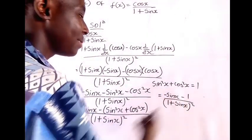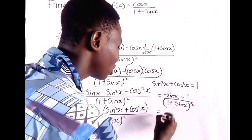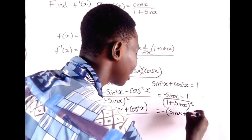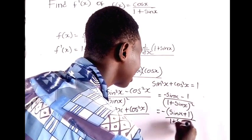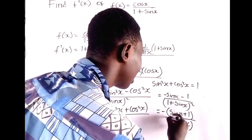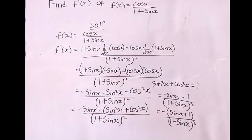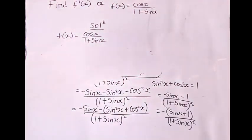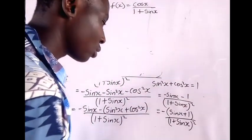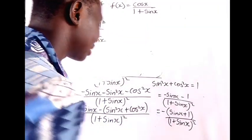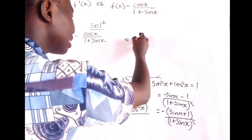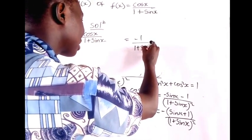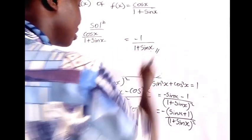We can factor out the negative to get −(sin x + 1) over (1 + sin x) squared. The (1 + sin x) in the numerator cancels with one factor in the denominator, giving us the final answer: −1 / (1 + sin x).